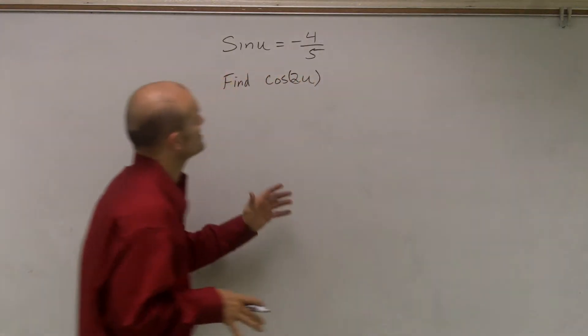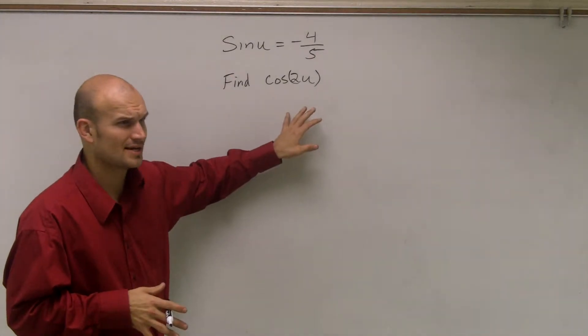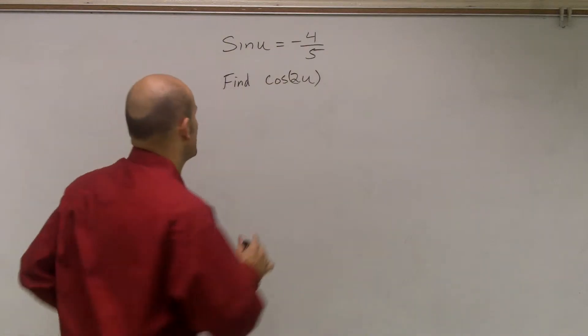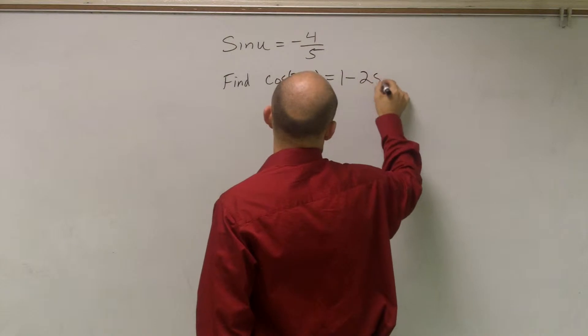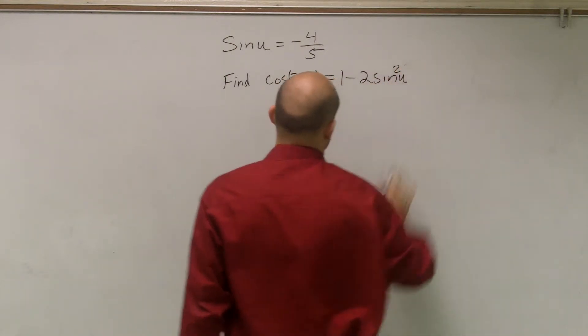The one that I notice is there is a formula for the double angle of cosine which just uses the sine value. That formula for cosine of 2u is 1 minus 2 sine squared of u.